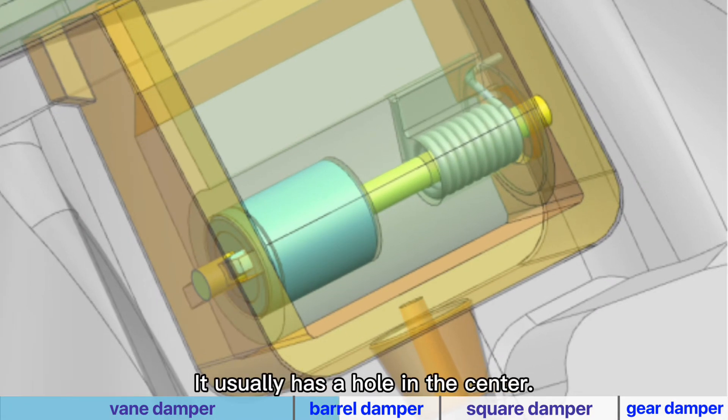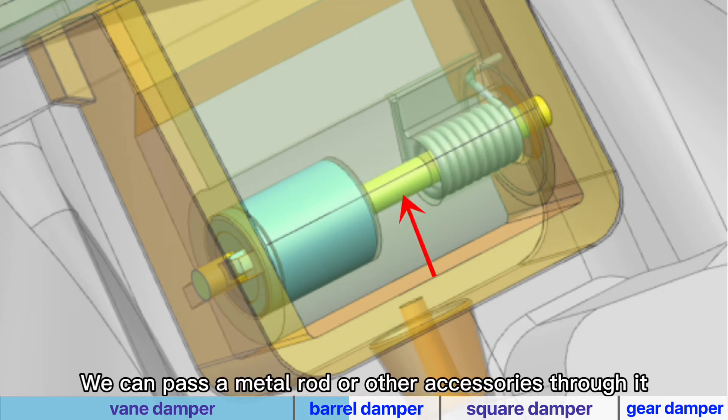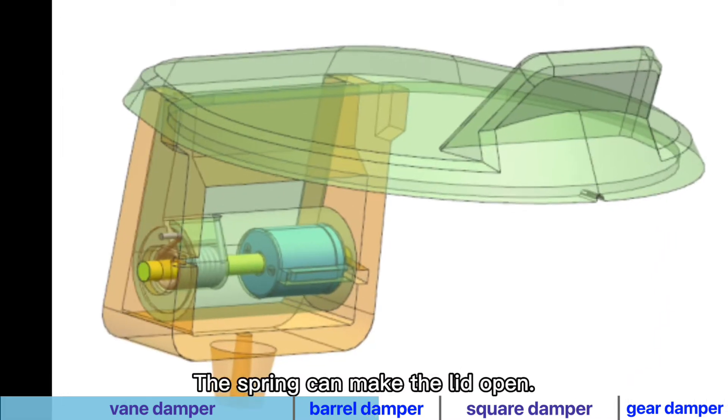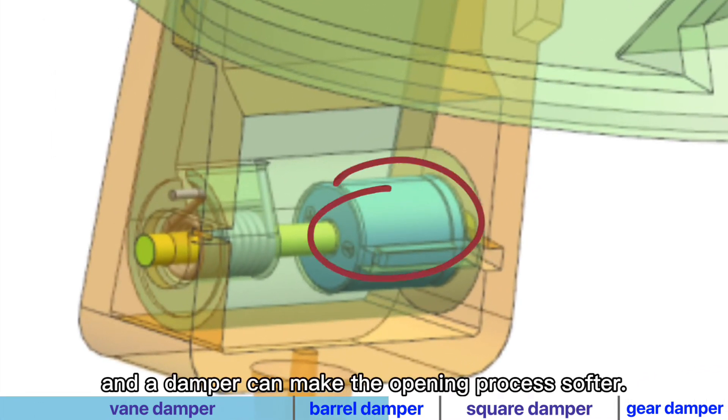It usually has a hole in the center. We can pass a metal rod or other accessories through it to connect with the spring. The spring can make the lid open and the damper can make the opening process softer.